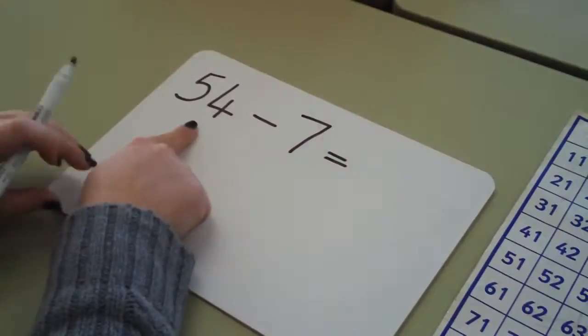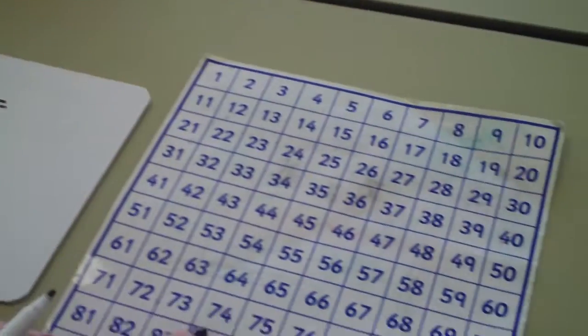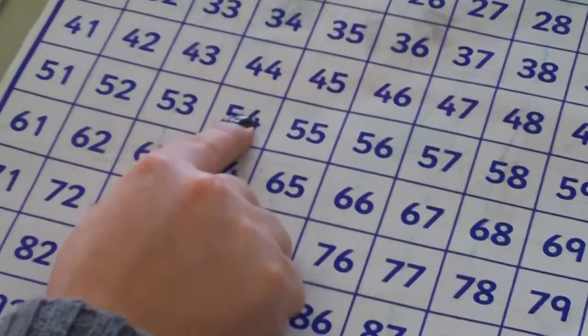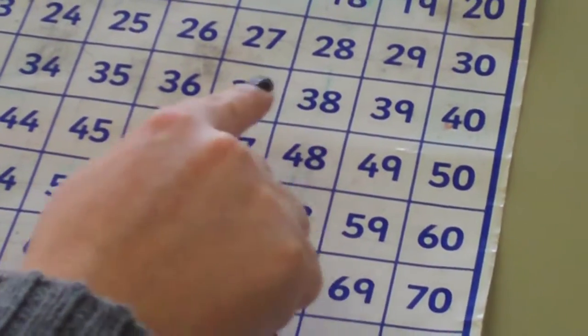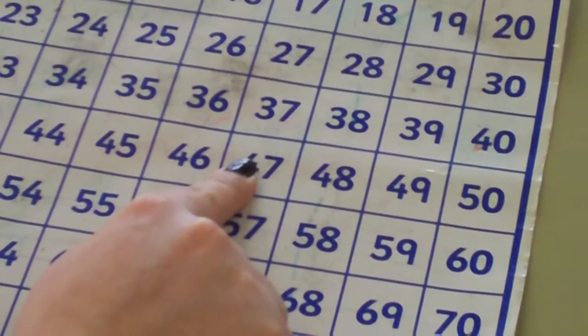For taking away, 54 take away 7. Point your finger to 54 and jump back 7 spaces. 1, 5, 6, 7, and the answer is 47.